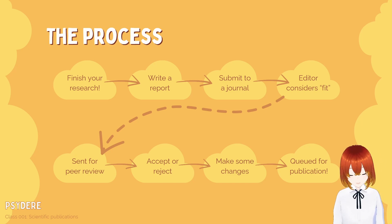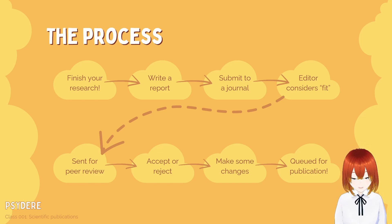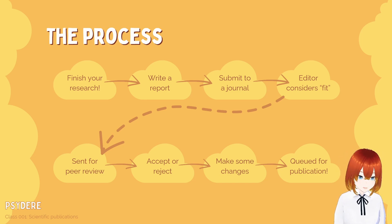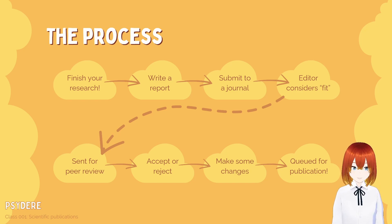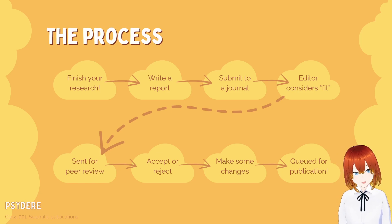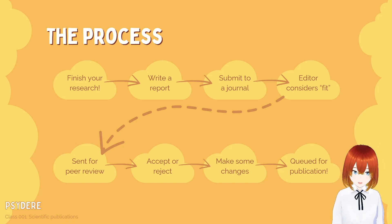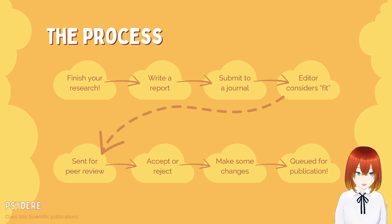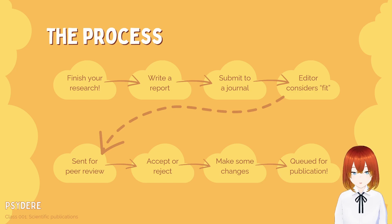Once you've got your report, you submit it to a journal, which is basically a fancy web portal these days. You type in your name, university affiliation, and submit your manuscript as a Word document or PDF. If the editor thinks the article fits the journal's topic and methodology, it gets sent out for peer review. After peer review, the article is either accepted, rejected, or accepted with amendments. If accepted and changes are approved, congratulations - your article is now queued for publication.